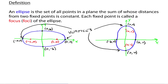The idea behind the definition is that if you take any point on your ellipse, the distance from that point to one red focus plus the distance to the other red focus — those two distances added together give you a number that is always the same, no matter which point you take on your ellipse. That's all this definition is talking about.